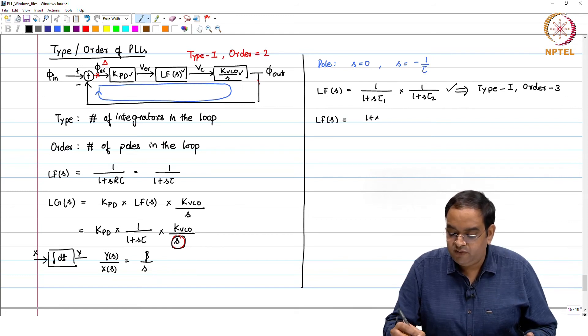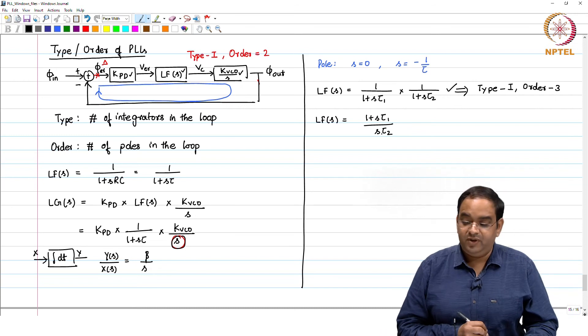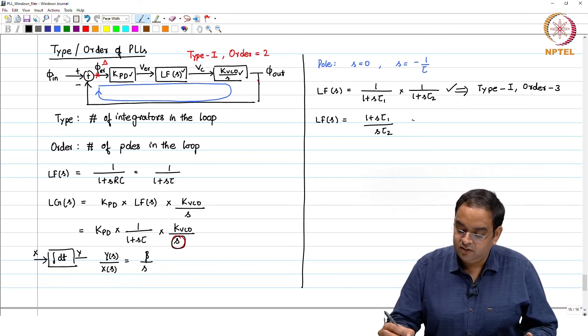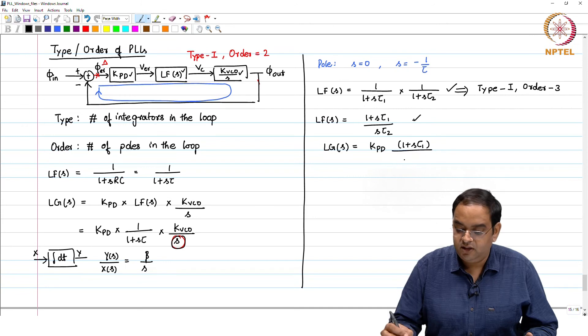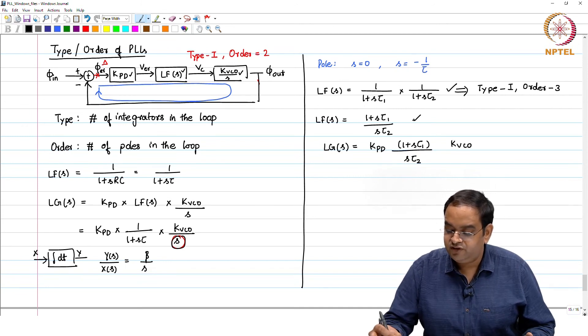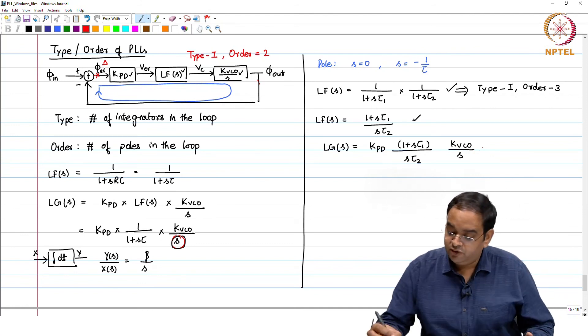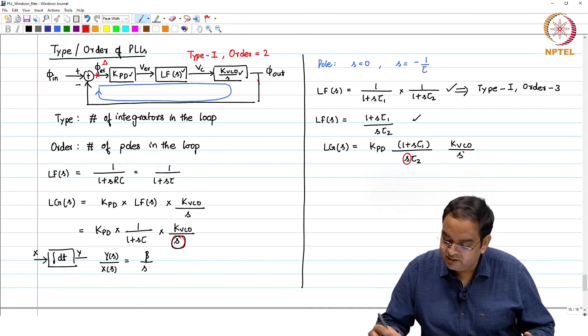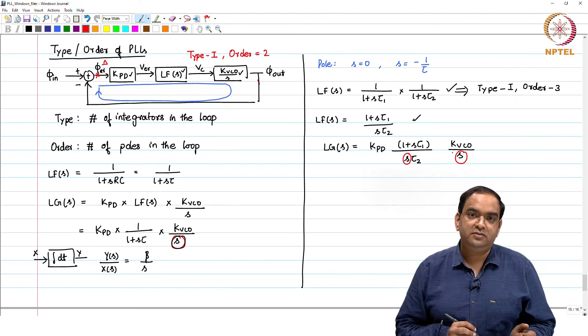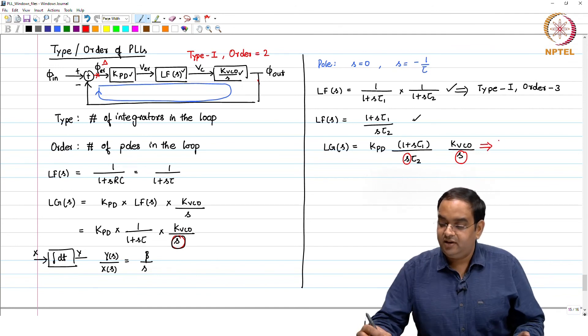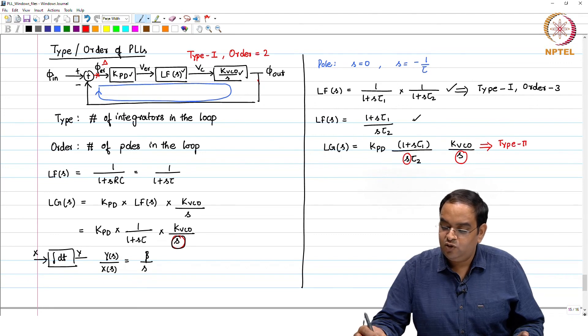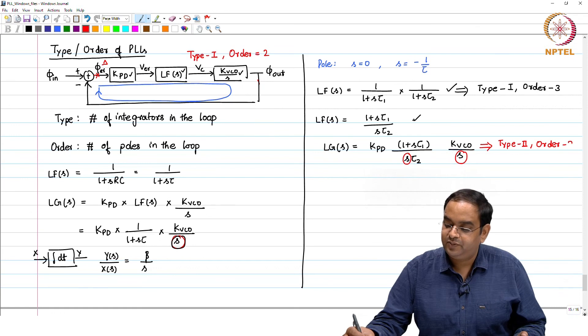If I have, let us say, 1 plus S tau 1 by S tau 2, just an example. In this case, if you use the loop filter as shown here, our loop gain of the PLL will be KPD times 1 plus S tau 1 divided by S tau 2 into KVCO over S. Now you see that in this case you are having 2 integrators or 2 poles at 0s, and 2 poles at 0s are behaving as 2 integrators also. A PLL with this loop gain will be type 2 and order 2.